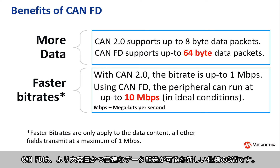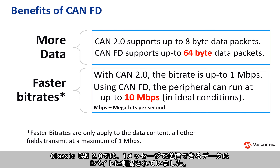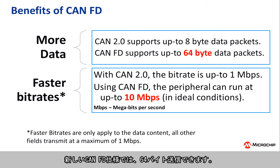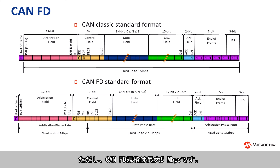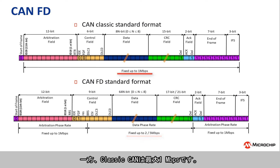CAN FD is a new version of the CAN specification that allows for larger and faster data transmissions. In classic CAN 2.0, the maximum amount of data that could be sent with each message was limited to 8 bytes. The newer CAN FD specification improves upon this by allowing for up to 64 bytes in each message. The CAN FD controller can be configured to a data bitrate of up to 10 Mbps using a 40 MHz CAN FD clock. The CAN FD standard, however, only goes up to 5 Mbps. In comparison, classic CAN is limited to 1 Mbps.